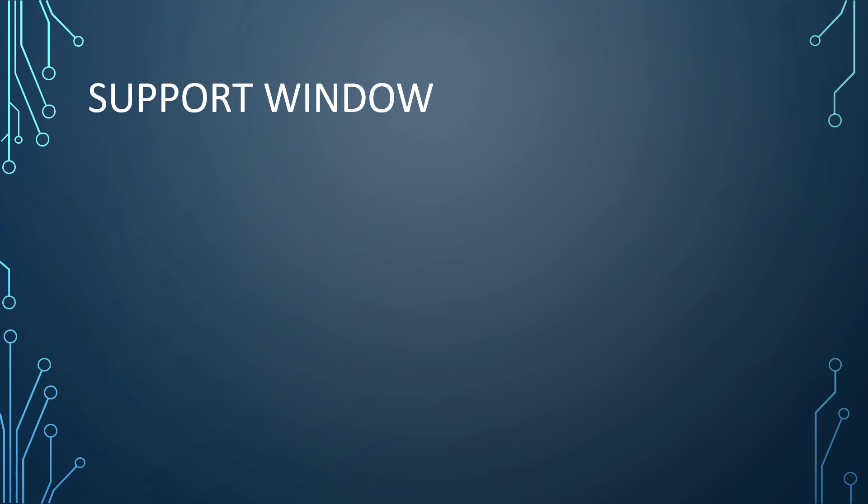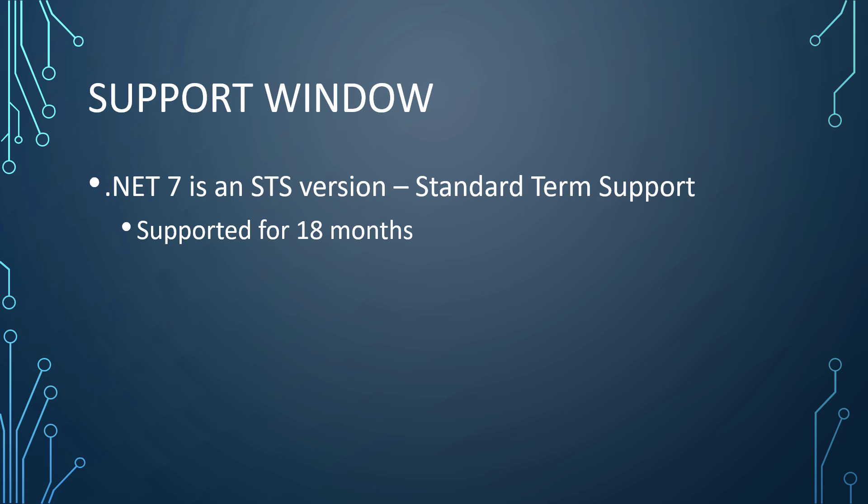Let's talk about the support window because the question always comes up: I want to learn the latest and greatest stuff, so I'll learn .NET 7 — but when it comes to using it in business, should I deal with .NET 7 or wait and skip it? There's some confusion around the two different types of versions of .NET. .NET 7 is what's now called a Standard Term Support or STS version, meaning it's supported for 18 months — a shorter term support.